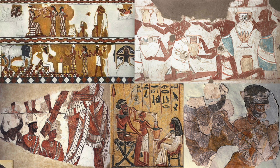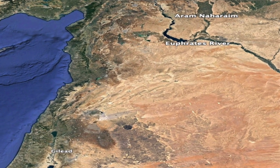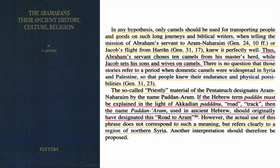This is important because Abraham likely lived in the Middle Bronze Age, and the wives of Isaac and Jacob also come from Syria in the Middle Bronze Age. According to the book The Arameans: Their Ancient History, Culture, Religion by E. Lemsky, biblical writers telling of Abraham's servant's mission to Aram Nahorim, or Jacob's flight from Haran, knew that camels were used for such long journeys. Abraham's servant chose ten camels, while Jacob sent his sons and wives on camels — stories referring to a period when domestic camels were widespread in Syria and Palestine.